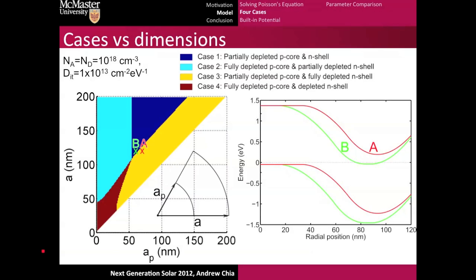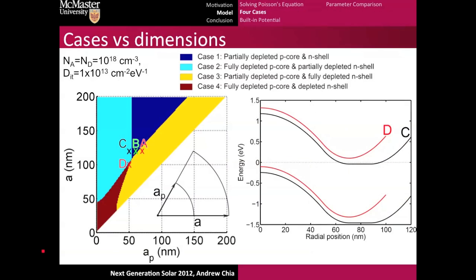Now, if we moved one over and made the core a little bit thicker but kept the overall size of the wire the same, then we'd run into the situation where we are in case three, which is the yellow region of the plot. You can see this pretty well because we have a quasi-neutral region of the core, but the shell is fully depleted. If we walk in the opposite direction and keep the wire 120 nanometers in radius but have a 50 nanometer core, we get this point number C and here we go to the opposite case, which is case two, which has a fully depleted core and a partially depleted shell. It's interesting how they change just by merely shifting the core radius dimensions.